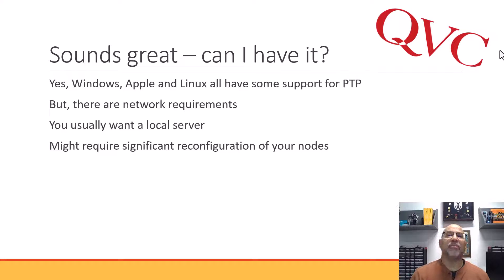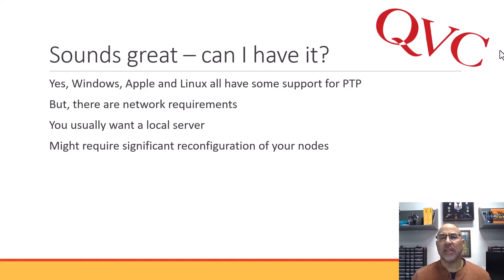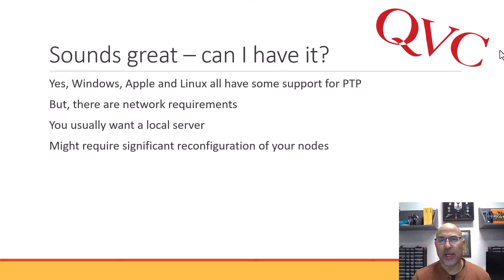Most modern operating systems have an implementation or support of PTP, but there are changes you have to make to your node. For example, to turn on PTP on a Windows machine there'd be registry changes, command line arguments, all kinds of stuff. There would still be network requirements - you'd need a server and maybe some specialized design. You don't need the design if you're just fooling around or doing testing. One key difference is that PTP often uses a very local server, which is one of the reasons you can get those precision measurements. So, a lot of specialized configuration is involved.